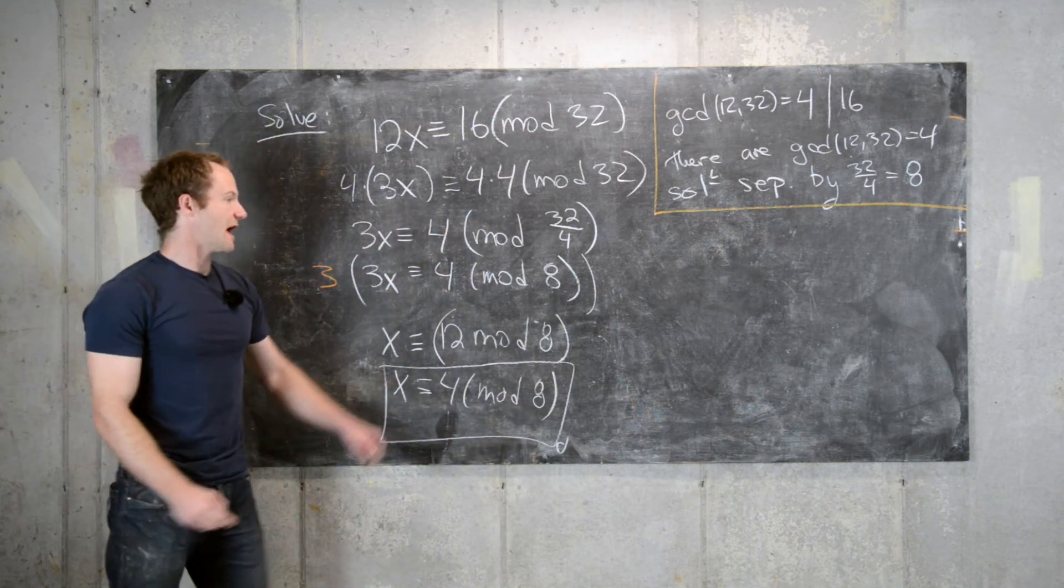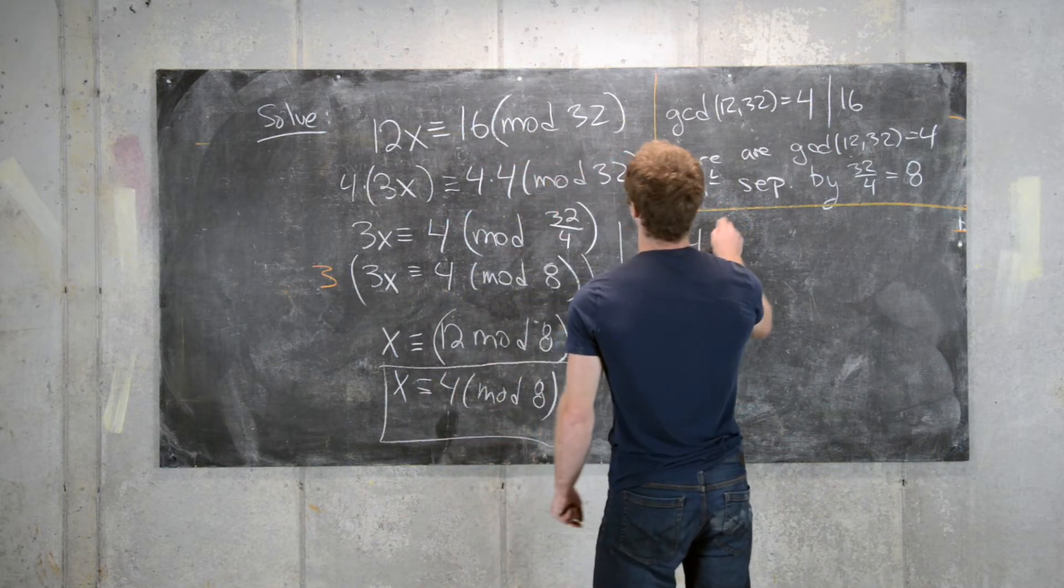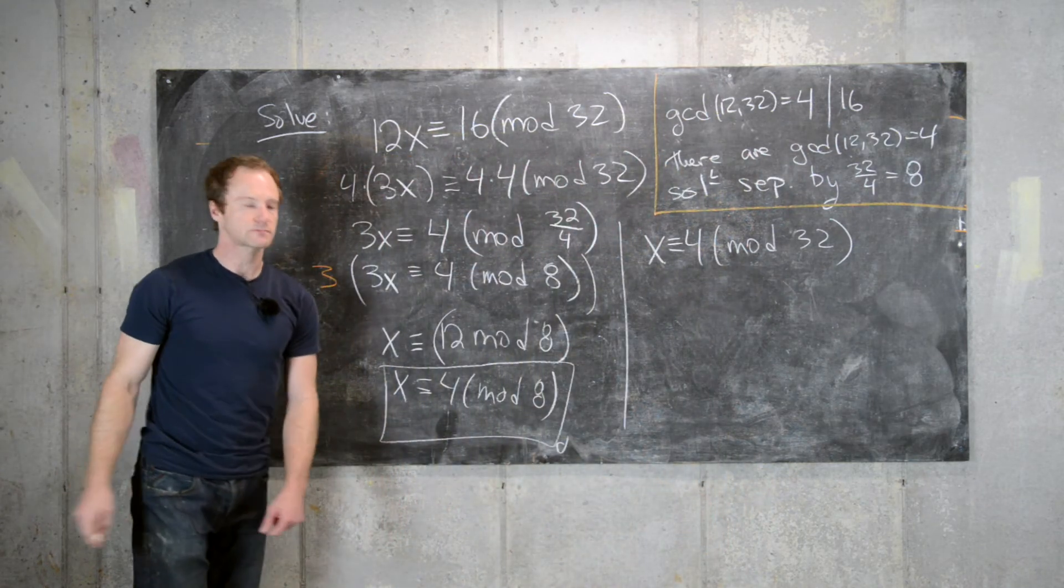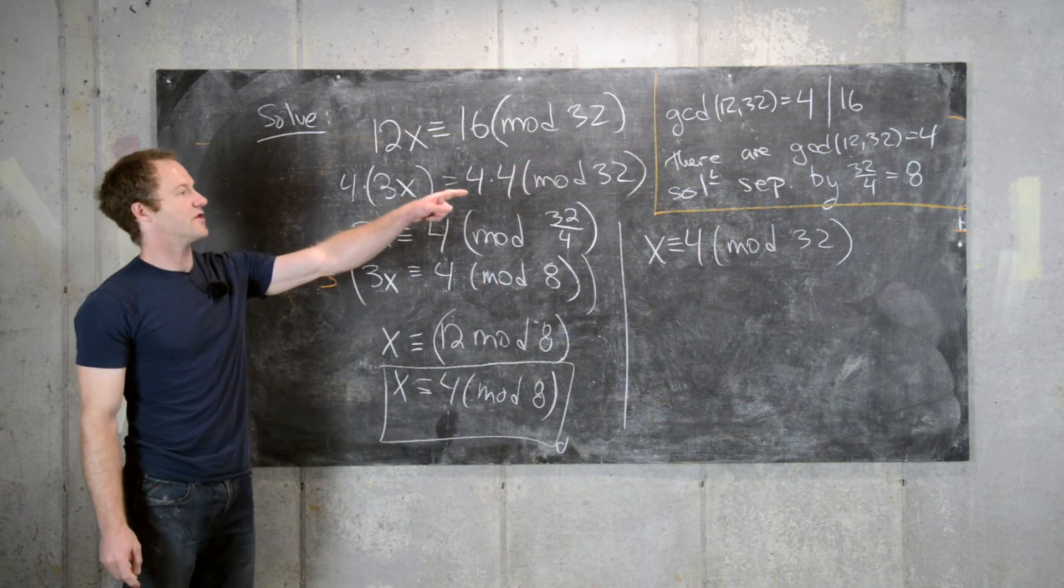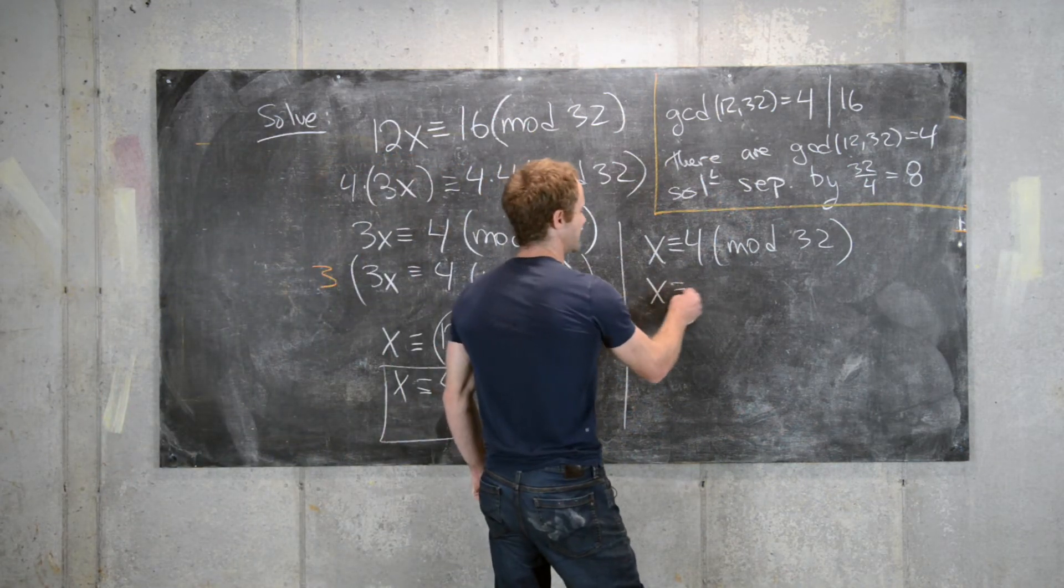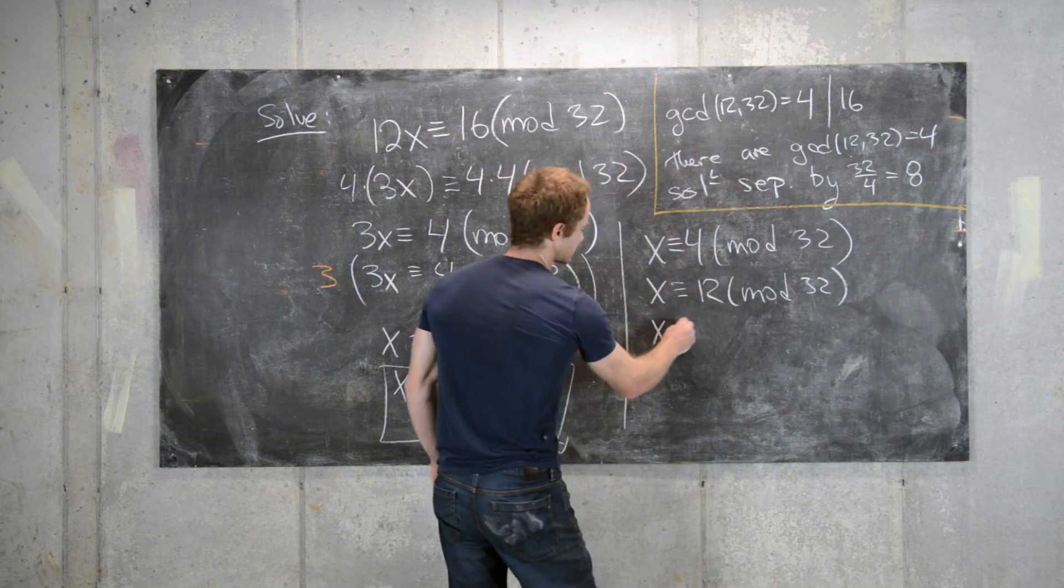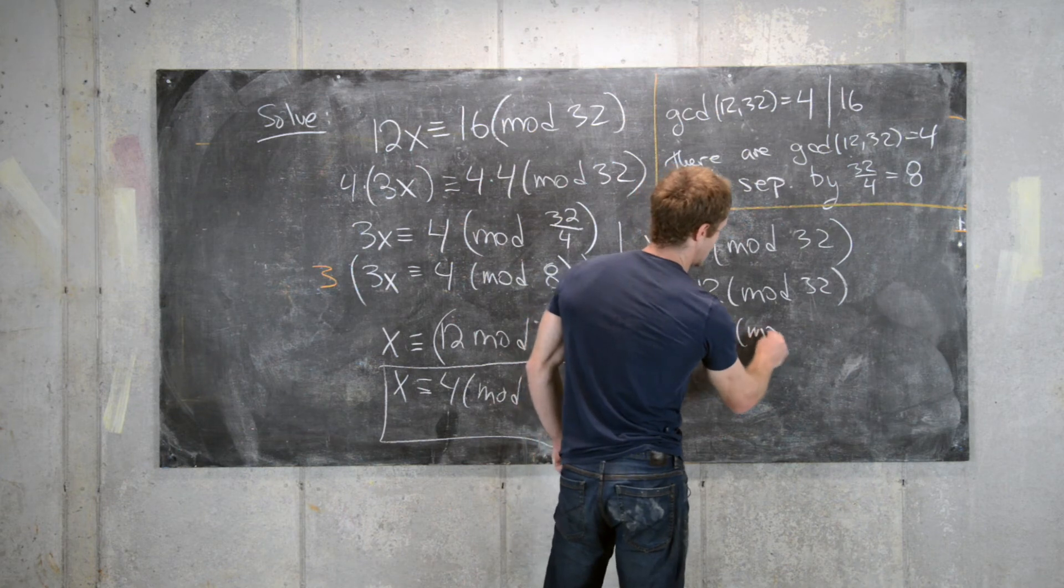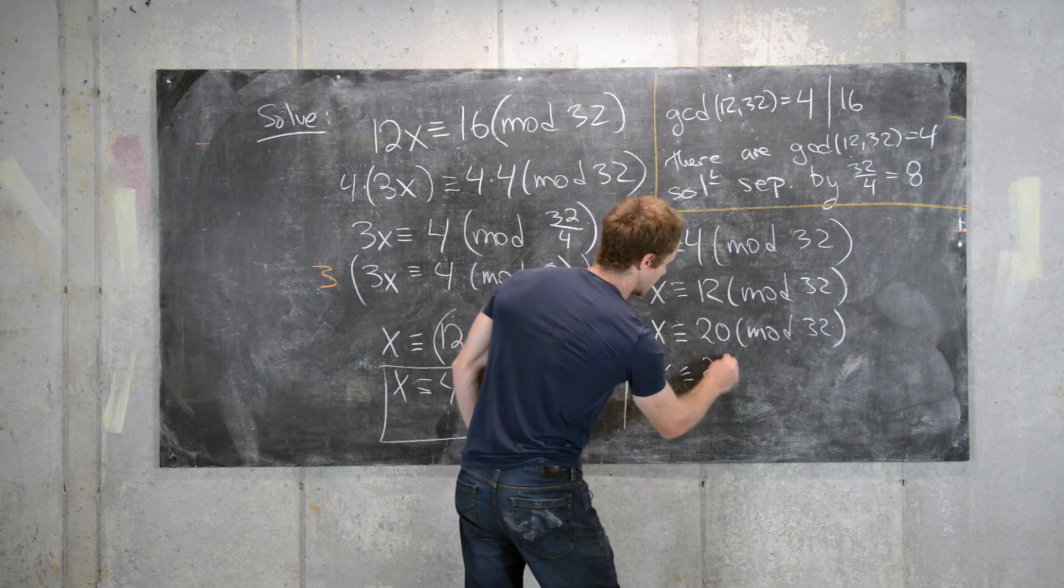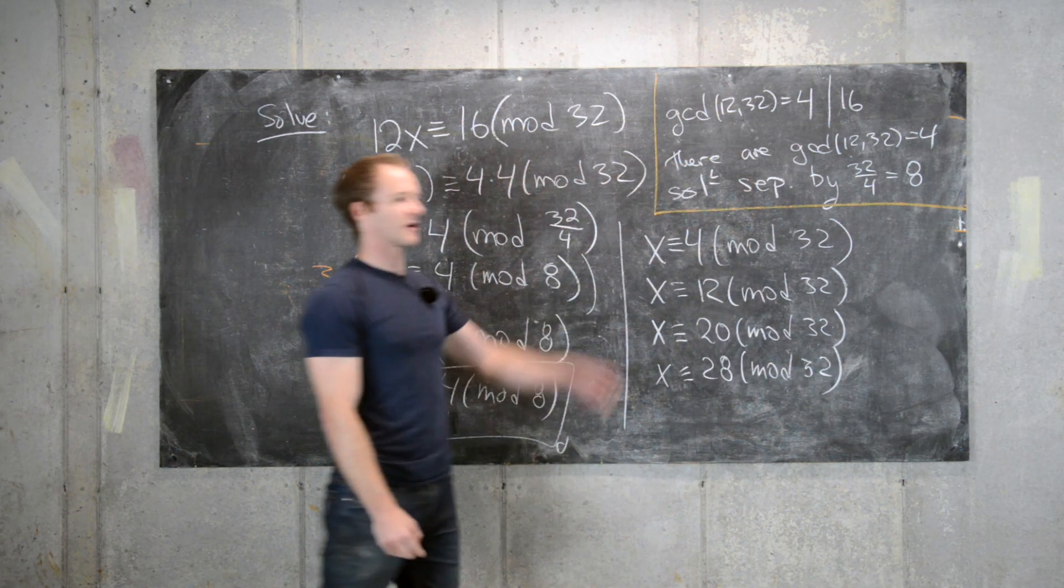So that means that we have 1 solution, x is congruent to 4 mod 32. And now we know that there should be 4 solutions, each separated by 8. So our next one will be x is congruent to 12 mod 32, x is congruent to 20 mod 32, and finally x is congruent to 28 mod 32. And there are our 4 solutions.